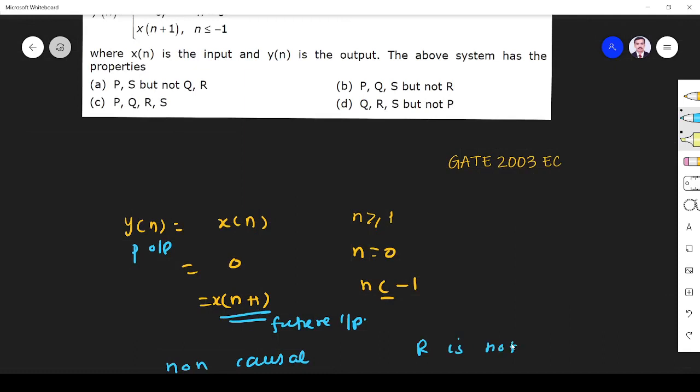R is not in the answer, so it must be 'R not'. This option is wrong, this is not R, this is not R. So out of these two, one should be the answer.